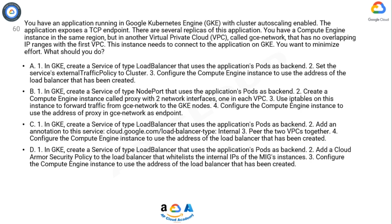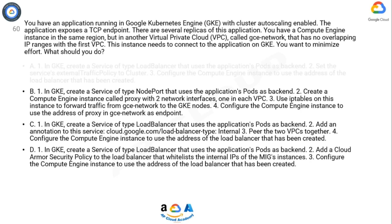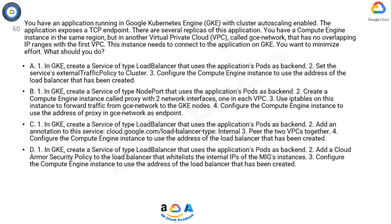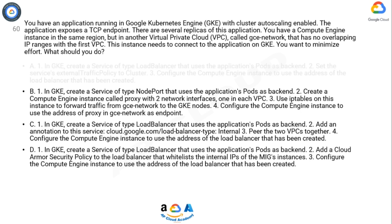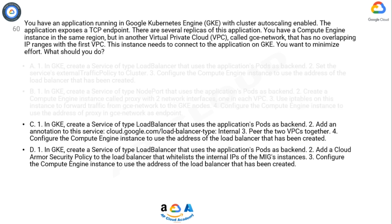In answer A, what we are doing is deploying an internet-facing load balancer, because it is the default load balancer type deployed if we do not specify an internal one in the annotations. This means traffic could come from outside our VPC, forcing the Compute Engine instance to go outside the Google network to come back inside through the endpoint published with the unicast IP of the balancer. The correct answer is option C.